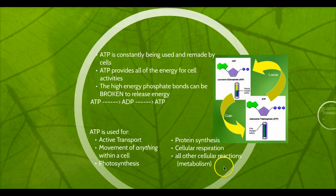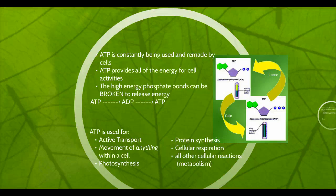ATP can be used for lots of different things. Just a couple of examples: active transport, which we've already talked about, and the movement of anything within a cell. Every single time your cell moves anything inside it — and we've talked previously about proteins being moved throughout the cell — that takes energy, so it's going to use ATP. Photosynthesis also requires some ATP in order to make the sugar. Protein synthesis takes energy in the form of ATP. Cellular respiration — in order to break down those glucose molecules — takes a little ATP but makes a bunch of it in the end. Any other cellular reaction that can be considered metabolism is going to require energy in the form of ATP.